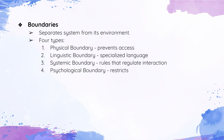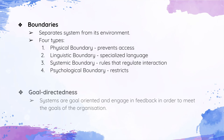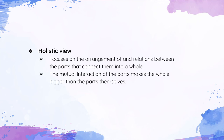Goal directedness: systems are goal-oriented and engage in feedback in order to meet the goals of the organization. Every part of the system is interdependent with each other, working together towards the goal. Holistic view: systems theory focuses on the arrangement of and relations between the parts that connect them into a whole. The mutual interaction of the parts makes the whole bigger than the sum of the parts themselves.